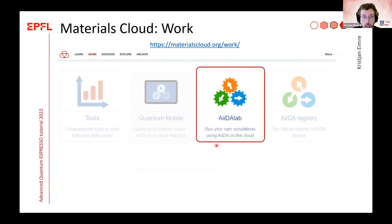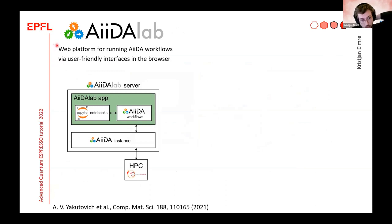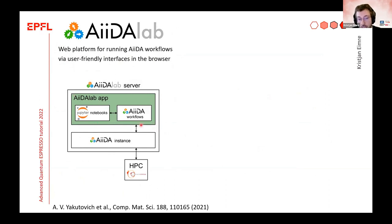The last part of the Work section is AiiDAlab, which I will now go into in more detail. In one sentence: AiiDAlab is a web platform for running AIDA workflows via user-friendly interfaces in the browser. The central concept in AiiDAlab is apps. The idea is simple: you have a robust AIDA workflow, along with Jupyter notebook-based graphical user interfaces to run those workflows and analyze their results. These apps are hosted on the AiiDAlab server, which also runs an AIDA instance. The AIDA instance runs the workflows and communicates with the HPC, and everything is hosted on a web page so users can access their apps directly through the browser.